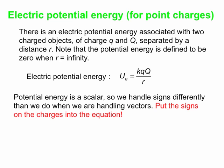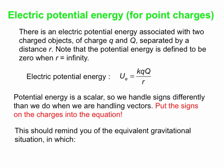Negative energy is associated with attractive interactions; positive energy is associated with repulsive interactions. We have seen a similar equation for interacting masses: gravitational potential energy is −GMm/r. That equation has a separate minus sign because the mass interaction is always attractive, whereas in the charge equation the signs come in through the q's.